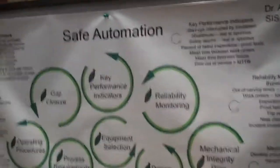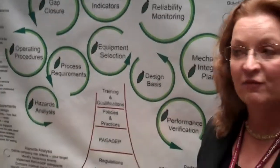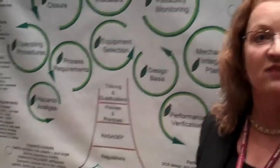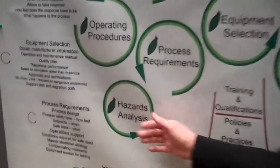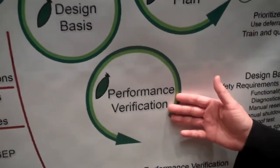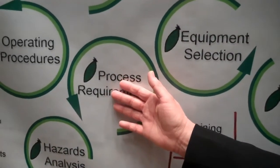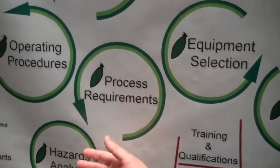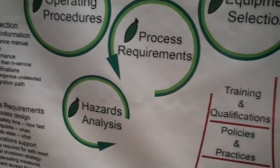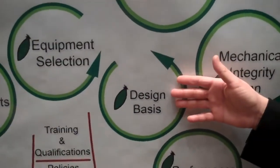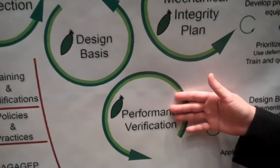What we have here is the life cycle of safe automation, represented as the tree of safe automation. We have the low-hanging fruit, which satisfies the grandfather clause of ESM — the hazard analysis and the performance verification. Once we've completed these two steps, we document what's required from the process perspective related to the hazard analysis and the design basis necessary to satisfy that performance.